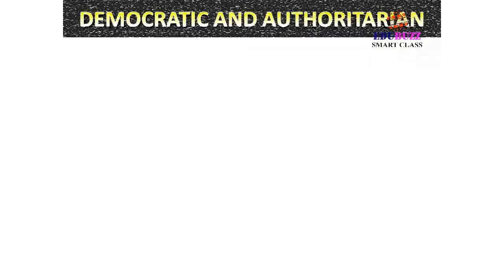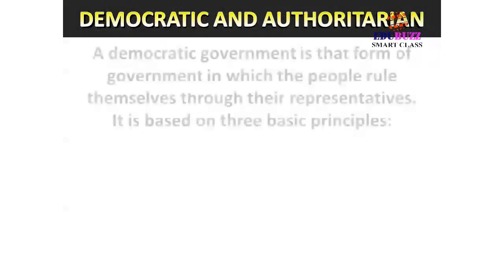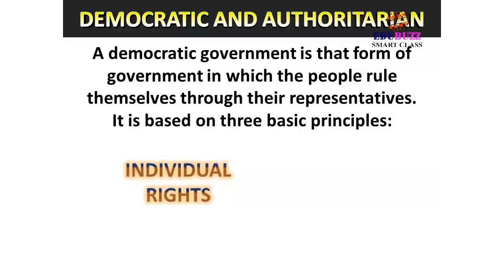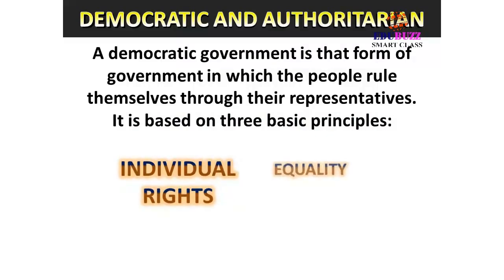A democratic government is that form of government in which the people rule themselves through their representatives. It is based on three basic principles: individual rights, equality and liberty.